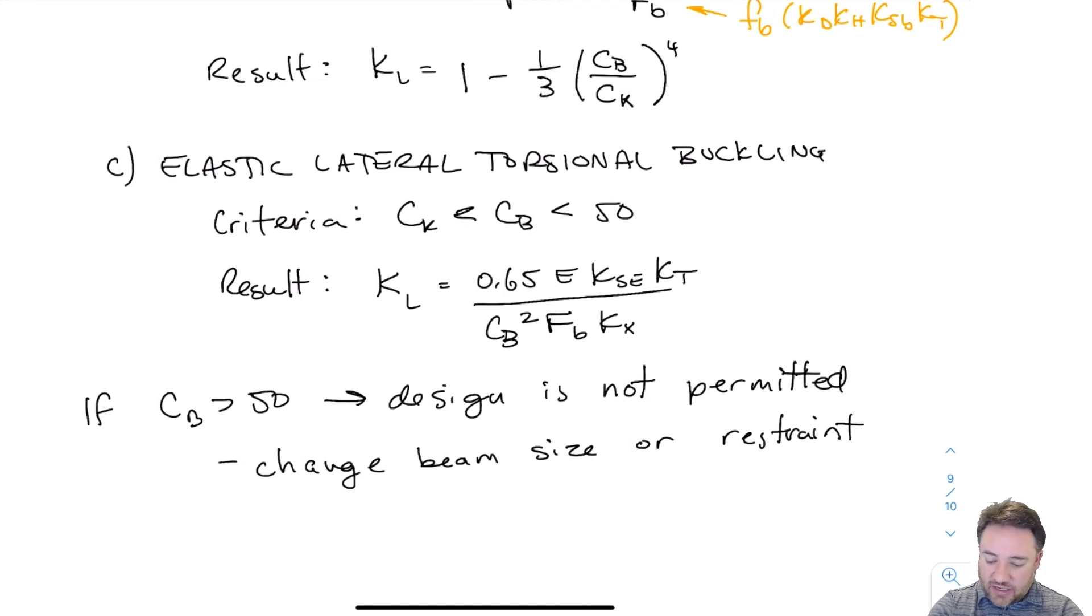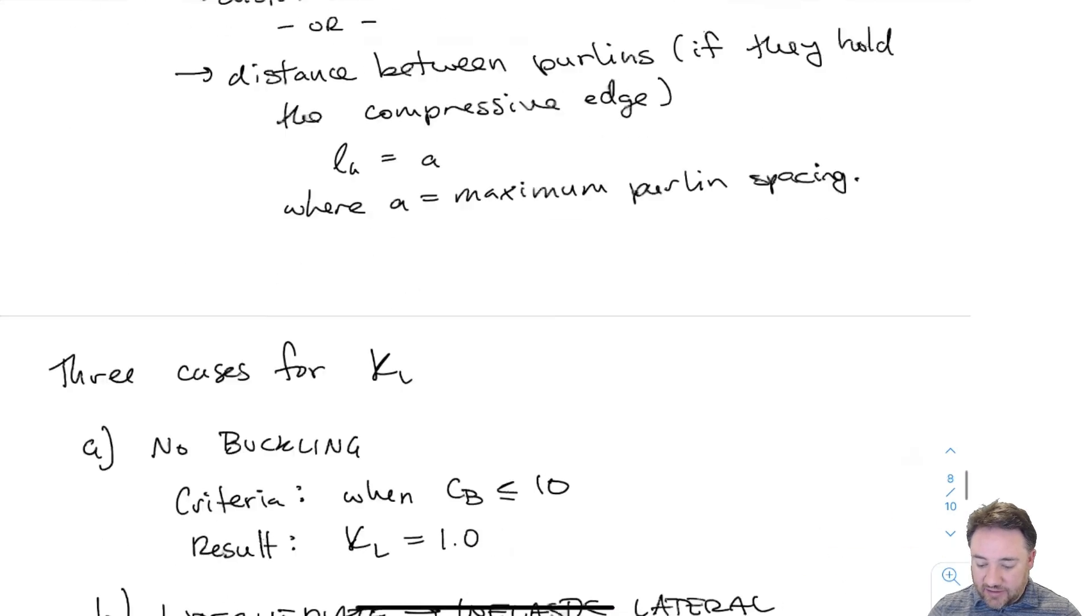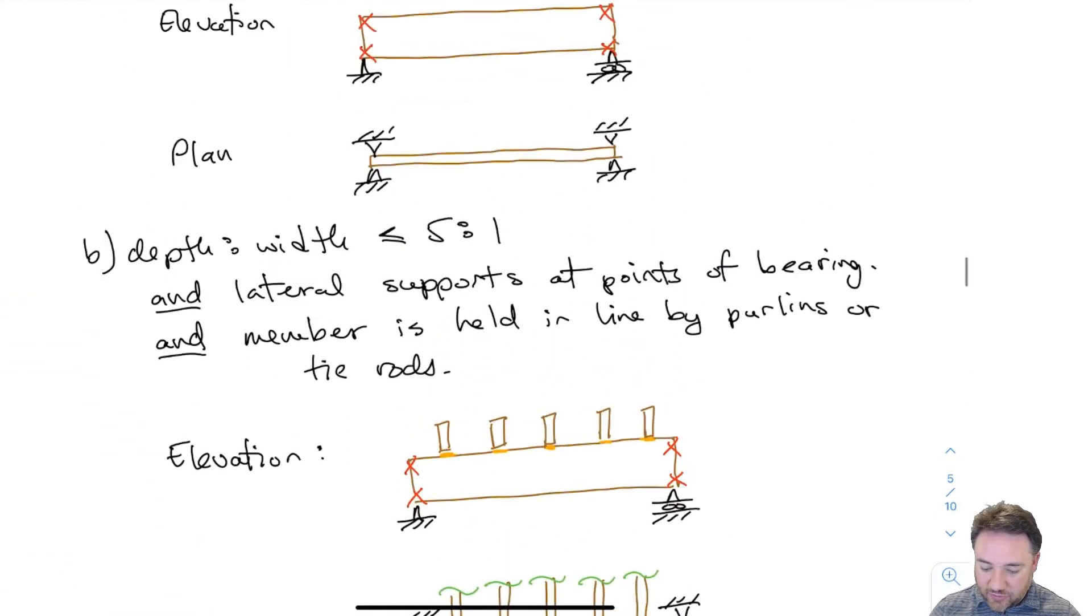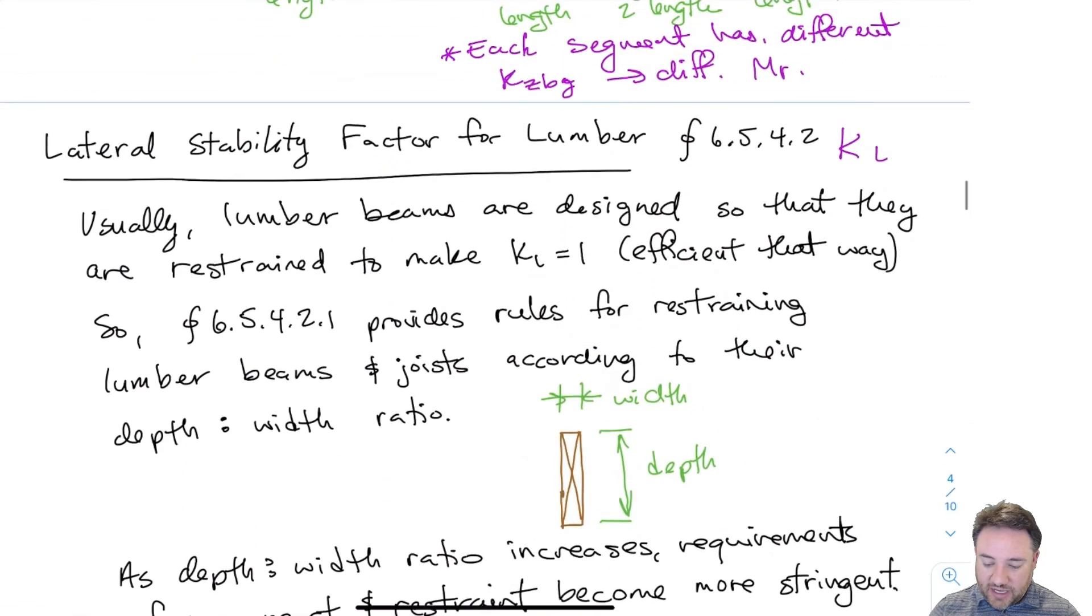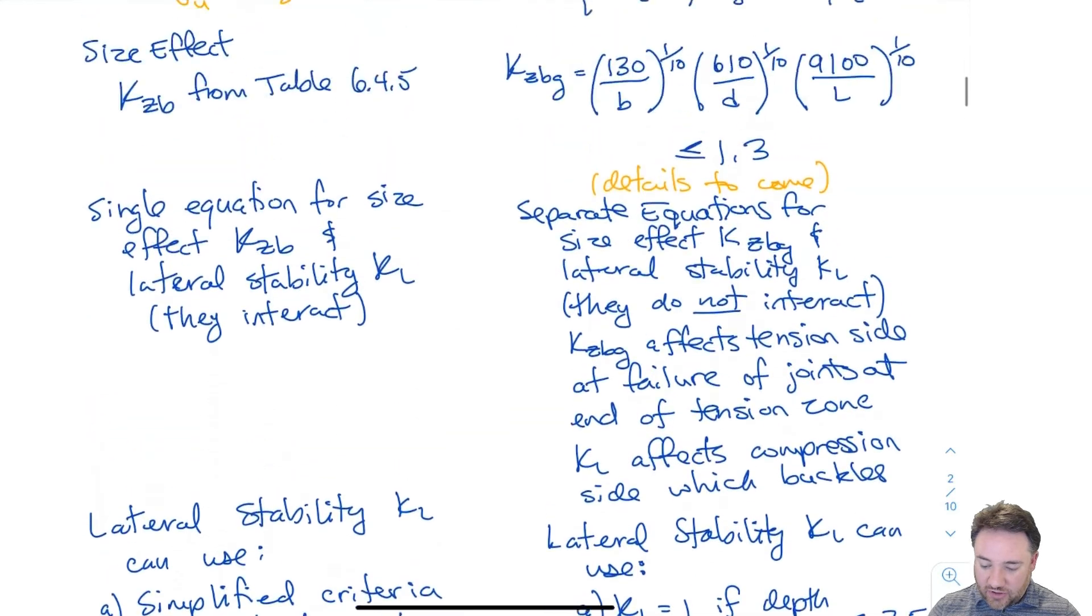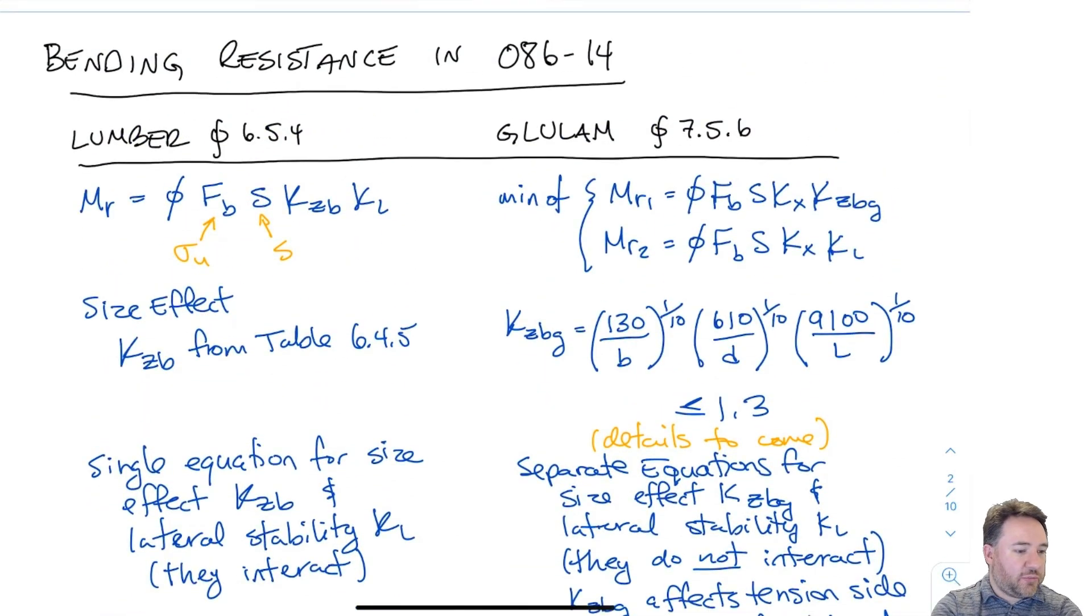That's it. Once we calculate KL, we can substitute it back into our equations. We've got KL for lumber or glulam using the lateral stability factor, and we can return to our equations for MR for bending resistance. We can now substitute KL in there, and we also saw how to calculate KZBG. The section modulus is I over Y—for rectangular sections that's BH squared over 6, which we'll see in the example—and FB is our strength. Now we have everything needed to calculate bending resistance for beams. In the next video we'll have an example after we talk about deflection criteria for beams.